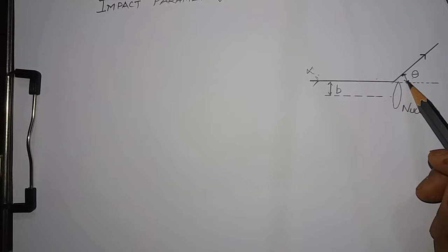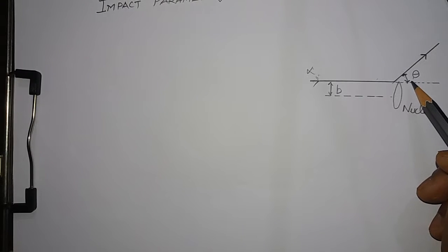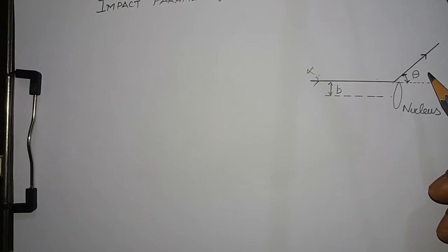This theta is called the angle of scattering, and it is defined as the angle by which the alpha particle gets deviated from its original path around the nucleus.